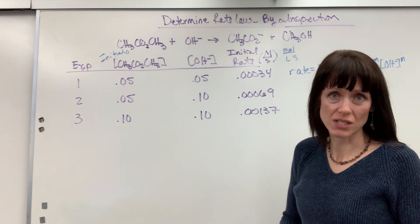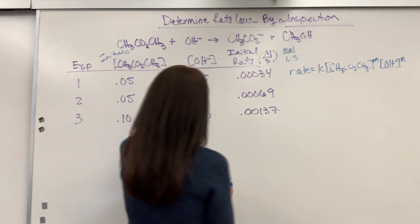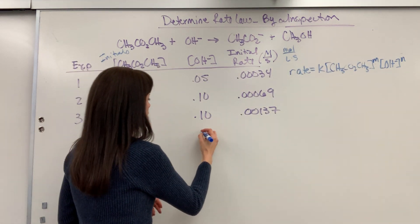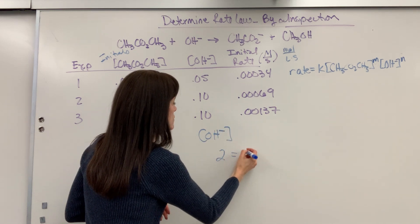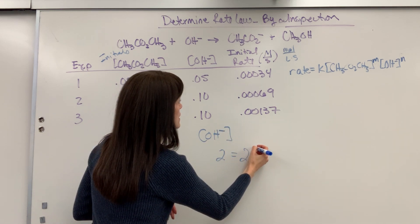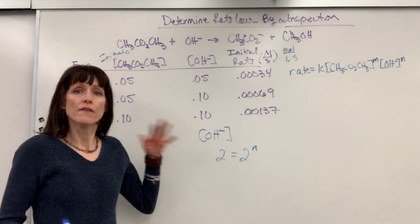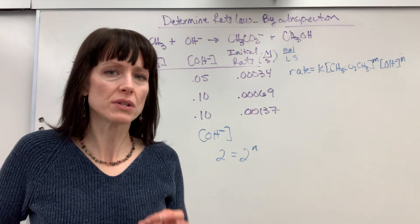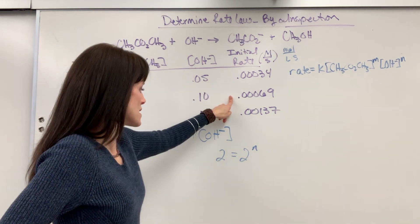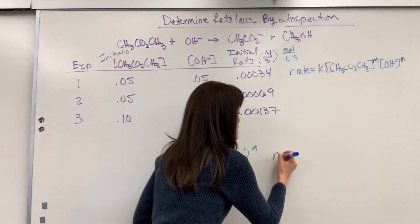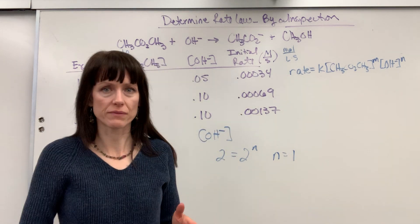Now here's how you could justify this. For the hydroxide, you could say that 2 equals 2 to the N. For me, that's enough if my students can show me that this doubled and this doubles, therefore N must be first order, I will give it to them.